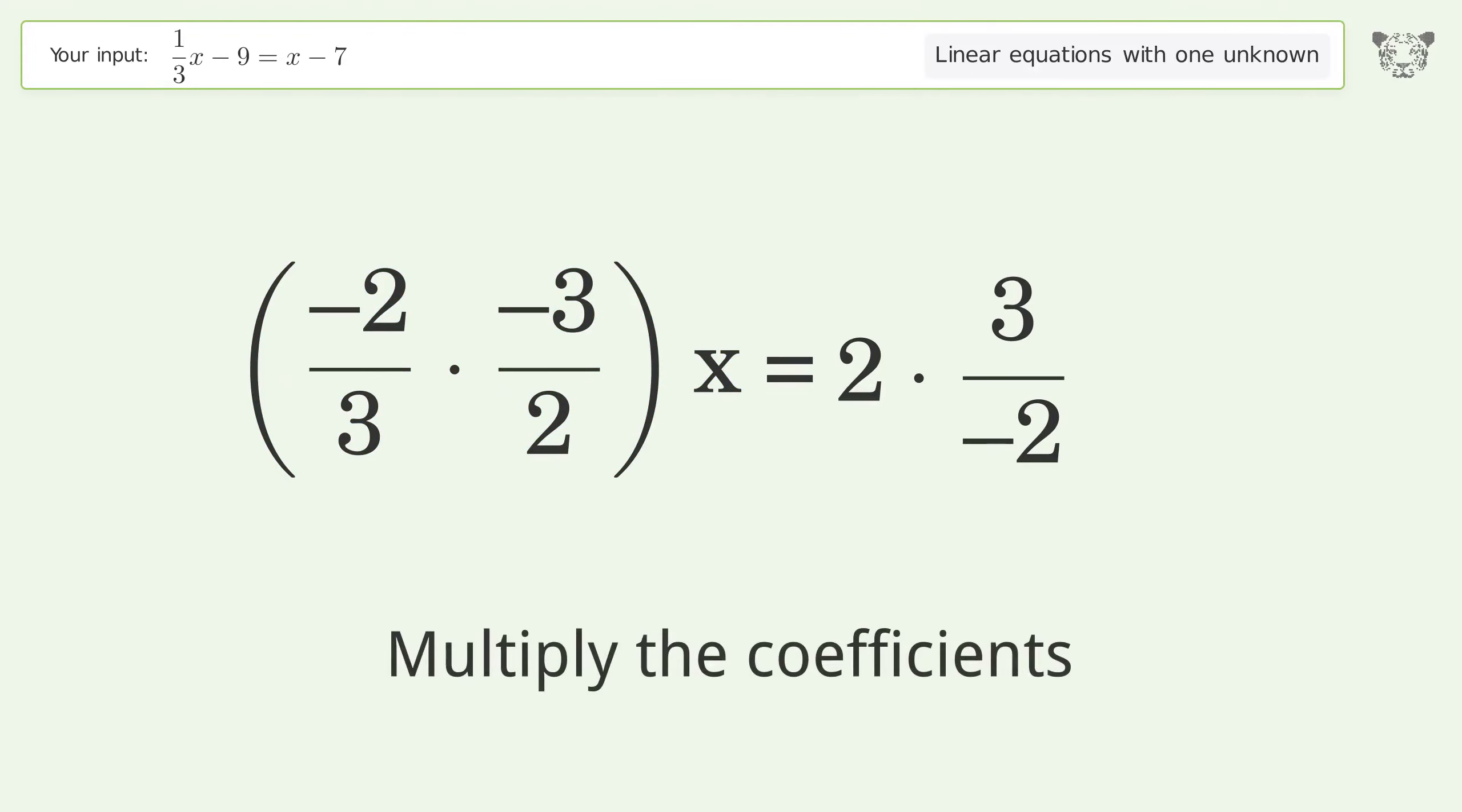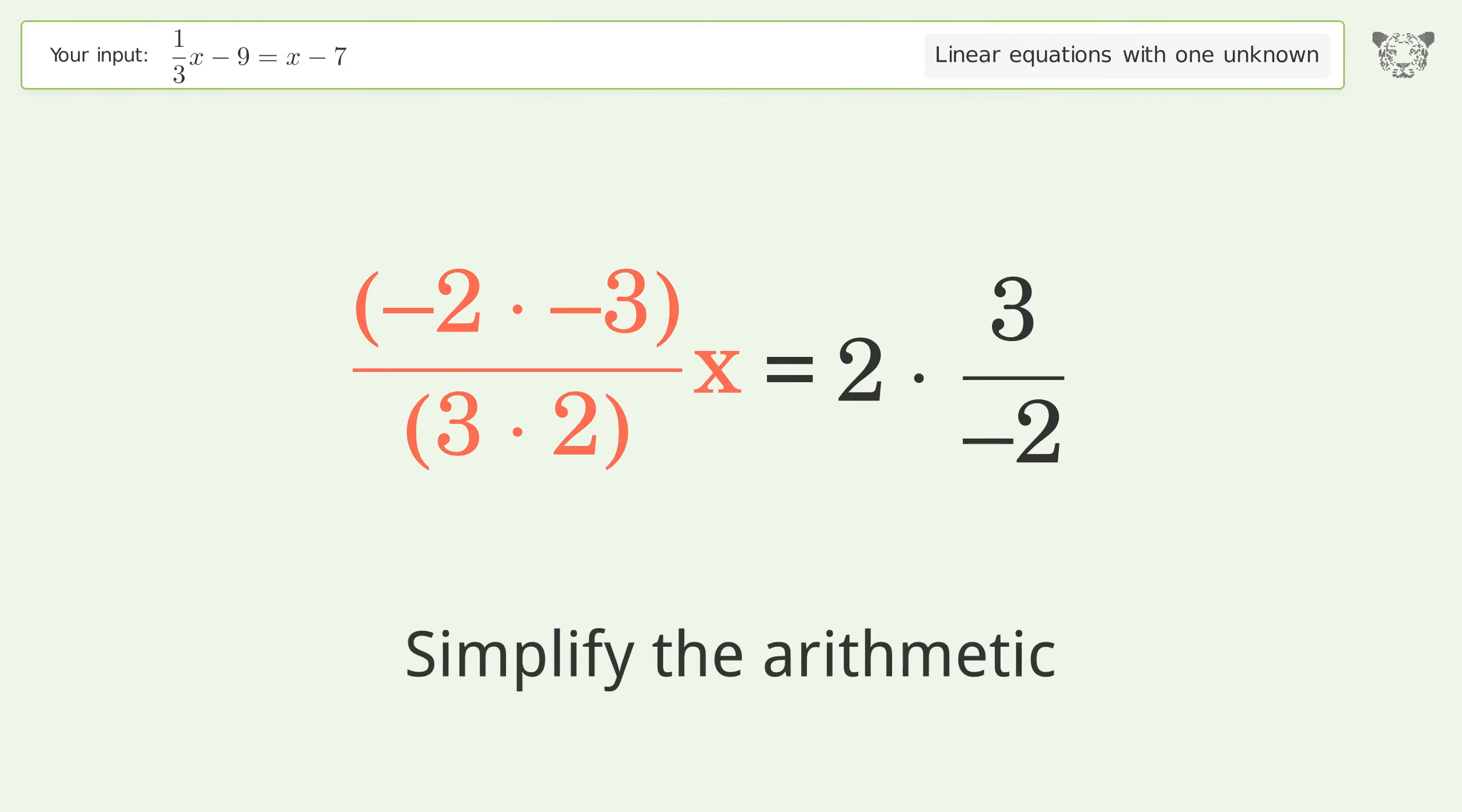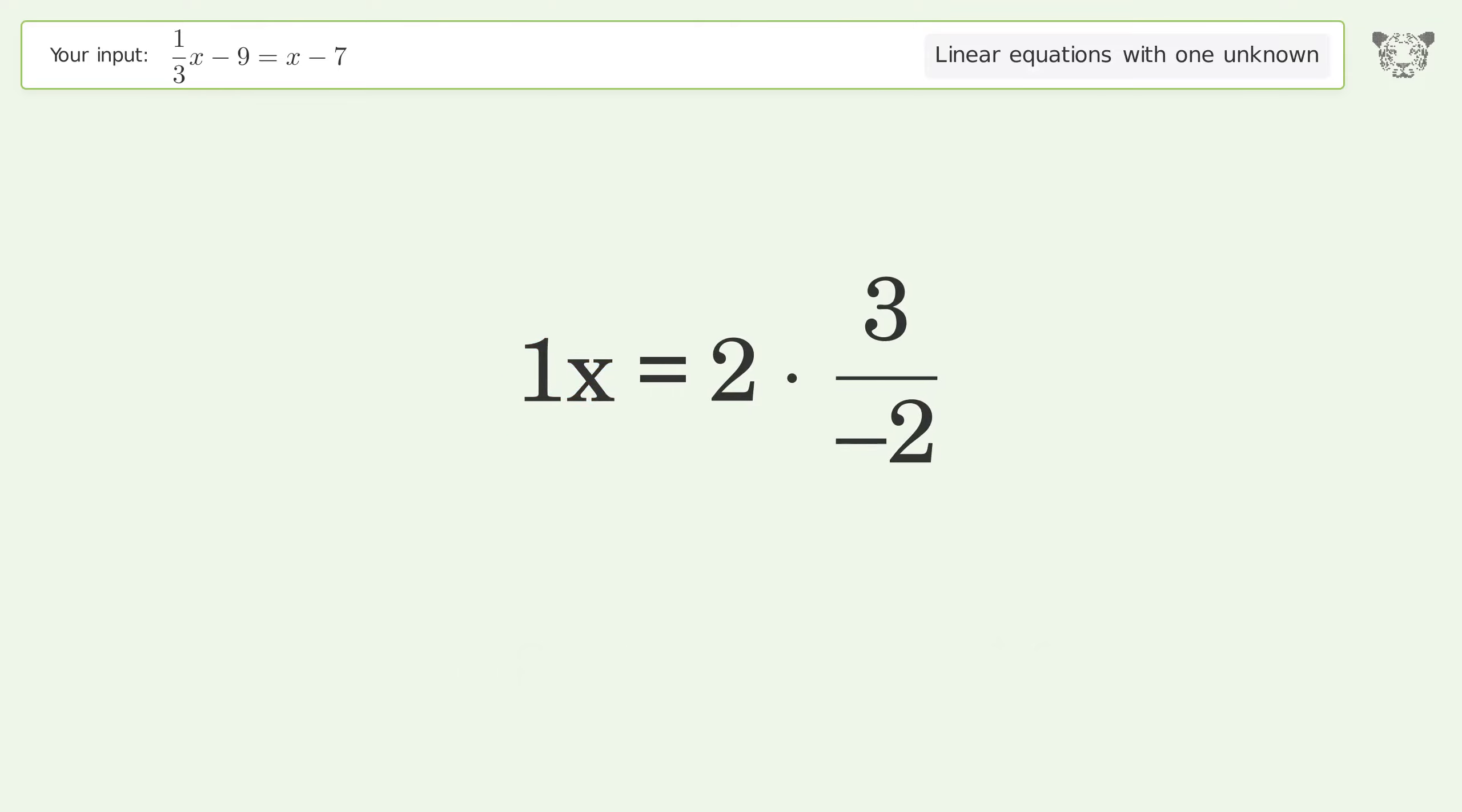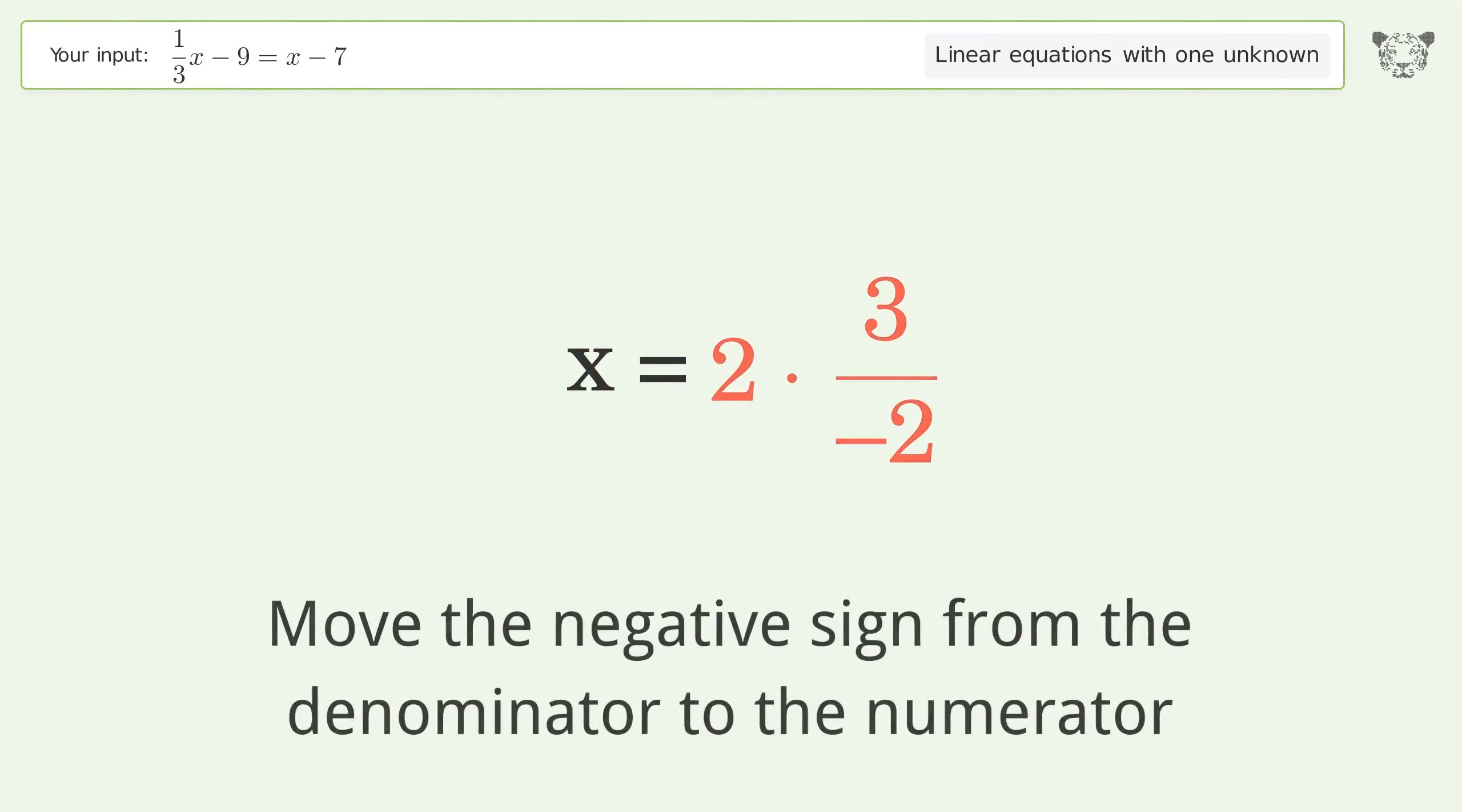Multiply the coefficients. Simplify the arithmetic. Move the negative sign from the denominator to the numerator.